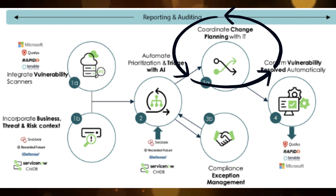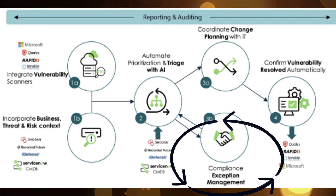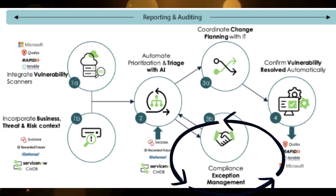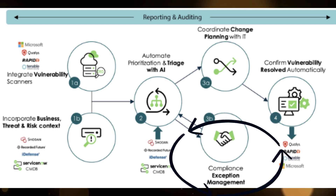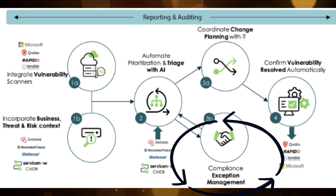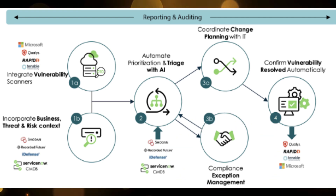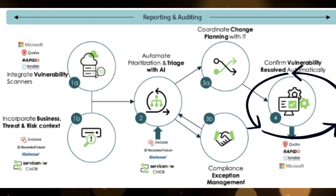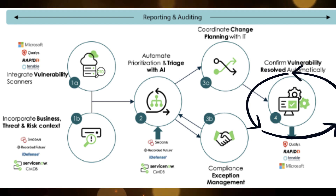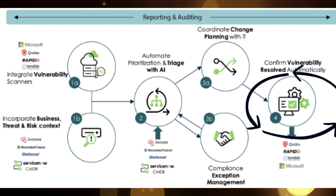Compliance and exception management is another component. The compliance team wants to know what happened to each configuration item that may require an ATO. Based on that, the compliance team can sometimes grant an exception for certain CIs or configurations if there is no immediate solution or if the solution may take some time. Once vulnerabilities are resolved within ServiceNow, that data is sent back to the third-party tools like Qualys, Rapid7, Tenable, and Microsoft, so both sides stay synchronized.